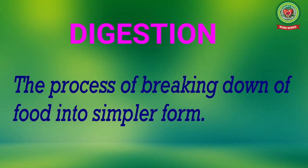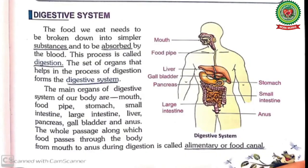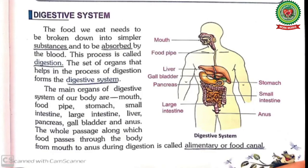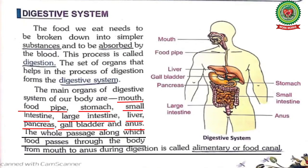Digestion means the process of breakdown of food into a simpler form. The set of organs that help in the process of digestion forms the digestive system. The digestive system means the group of organs that work together to digest food. The main parts involved are the mouth, food pipe, stomach, small intestine, large intestine, liver, pancreas, gallbladder, and anus.